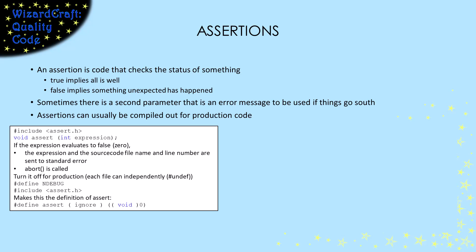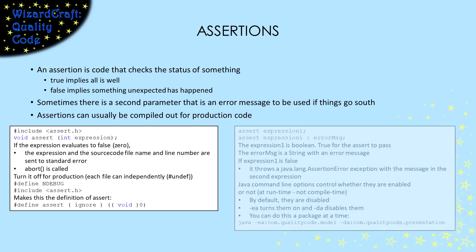In C, you get asserts by including assert.h. It feels like a function that has an integer parameter since C doesn't have native booleans. Zero means false, and that will make the assert crash the system. You can turn them off by defining NDEBUG before the include of assert.h. If NDEBUG is defined, the definition of assert changes to make it do nothing, but your code will still compile it.